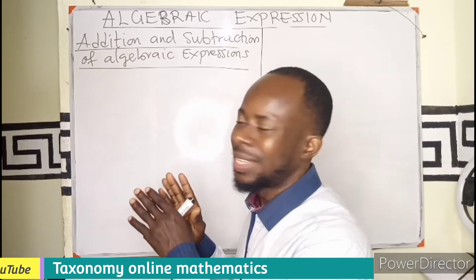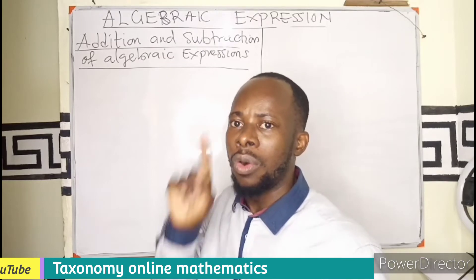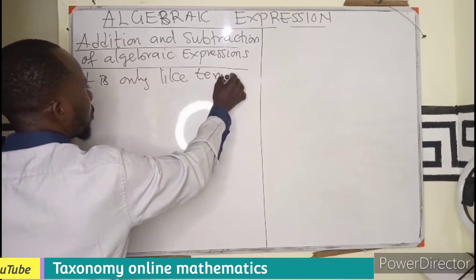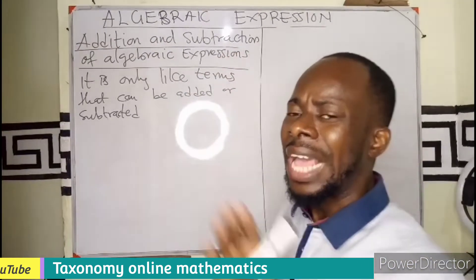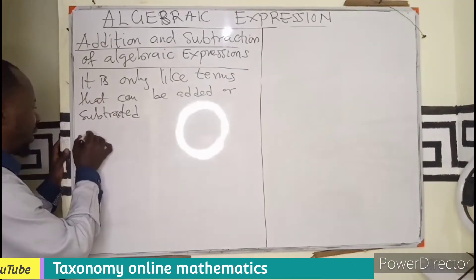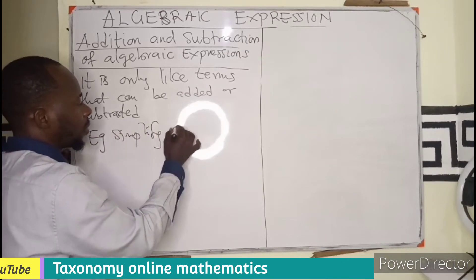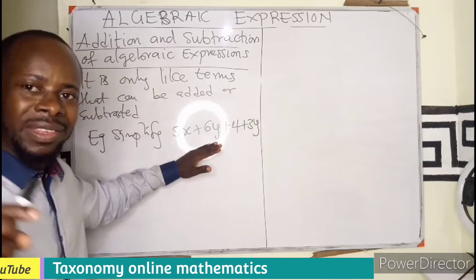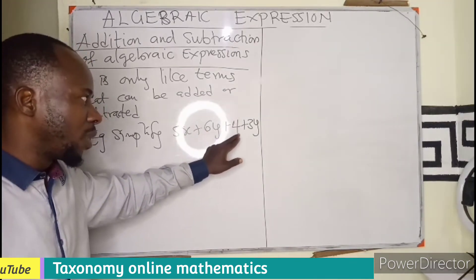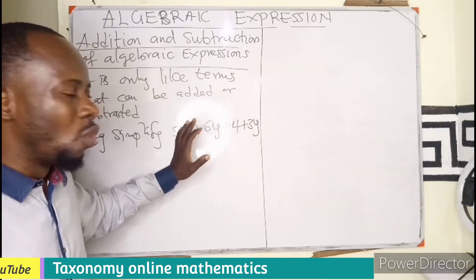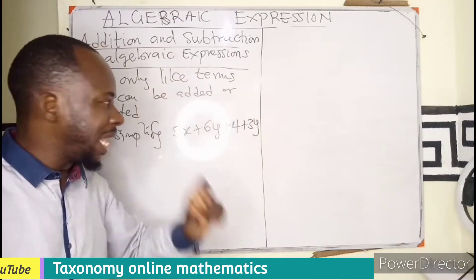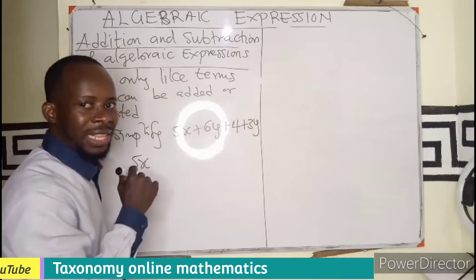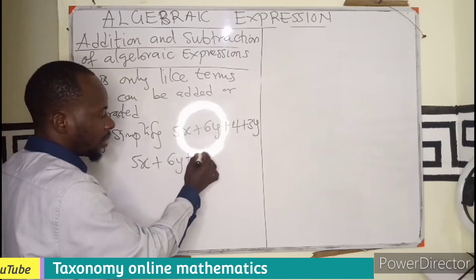Let's deal with the addition and subtraction of algebraic expressions. One trick we have to know here is that it is only like terms that are added or subtracted. If it is not a like term, we cannot add. For example, let's say we are asked to simplify the expression 5X plus 6Y plus 4 plus 3Y.